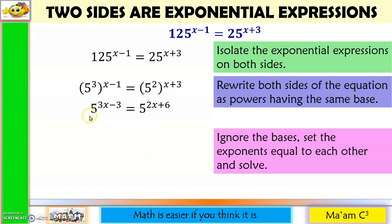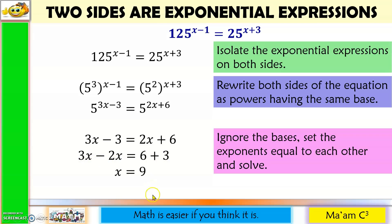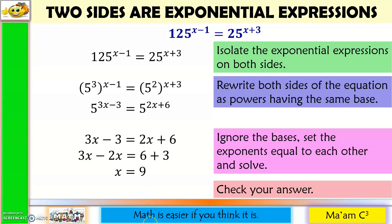Since we have the same base, focus on the exponents. So we have 3x minus 3 equals 2x plus 6. Move 2x to one side and negative 3 to the other: 3x minus 2x equals 6 plus 3. 3x minus 2x is x, and 6 plus 3 is 9. So x equals 9. I'll leave the checking to you.